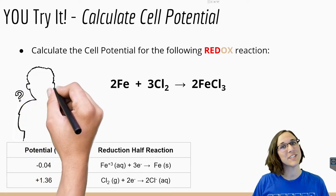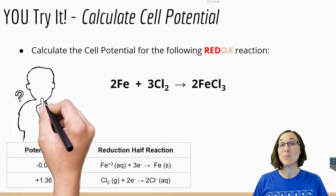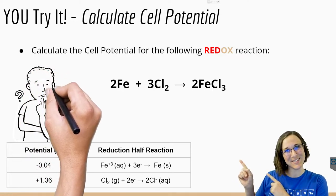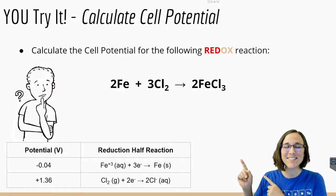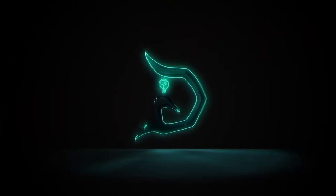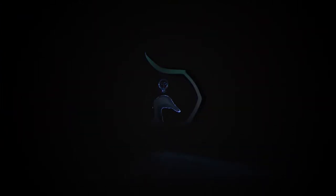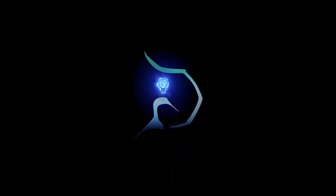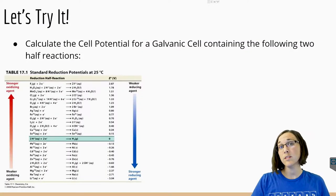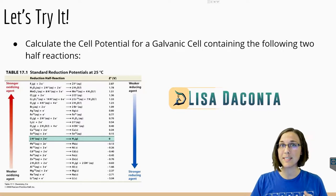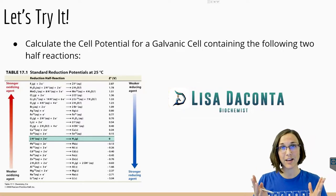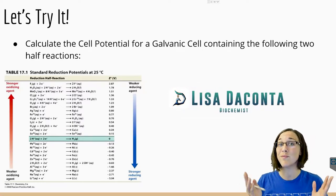Let's dive into calculating for cell potentials to be able to solve problems just like this one. In order to solve for cell potential, we have to look up a table containing half reactions that each have their own unique voltage.